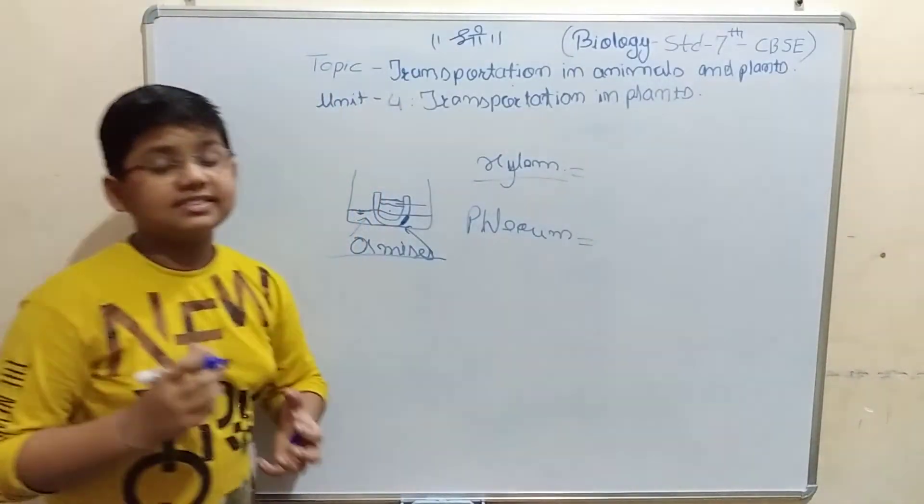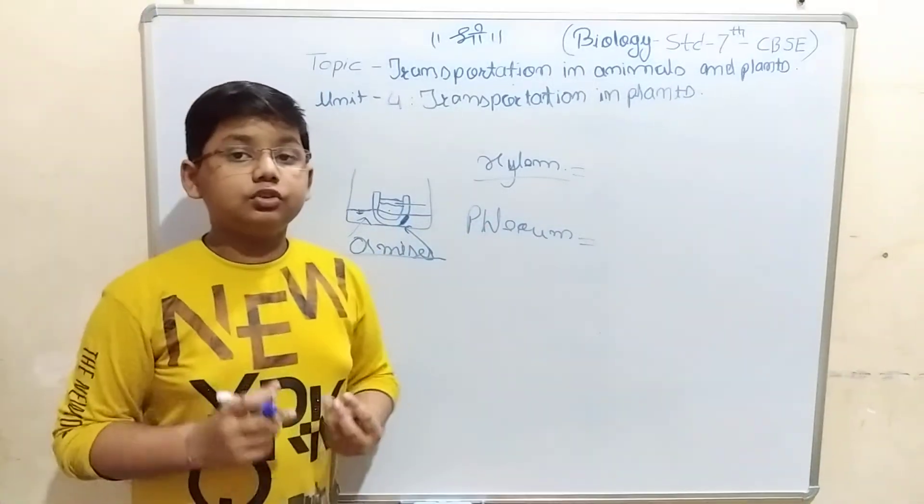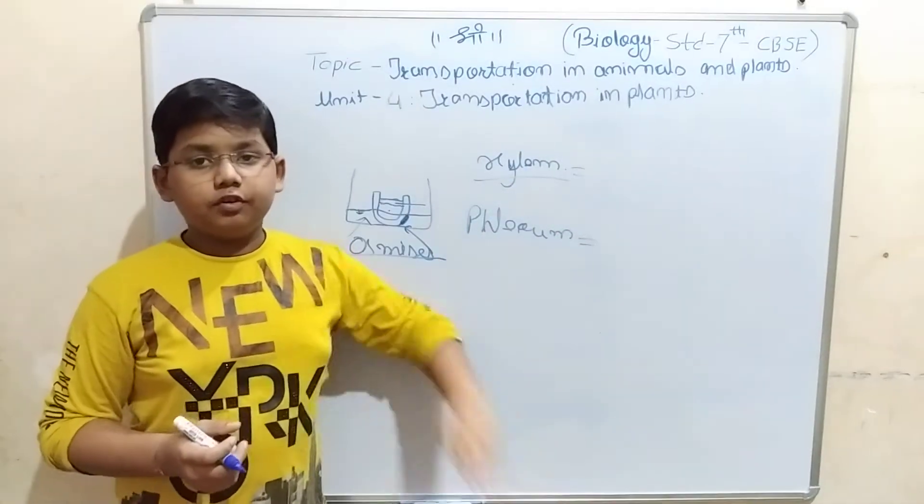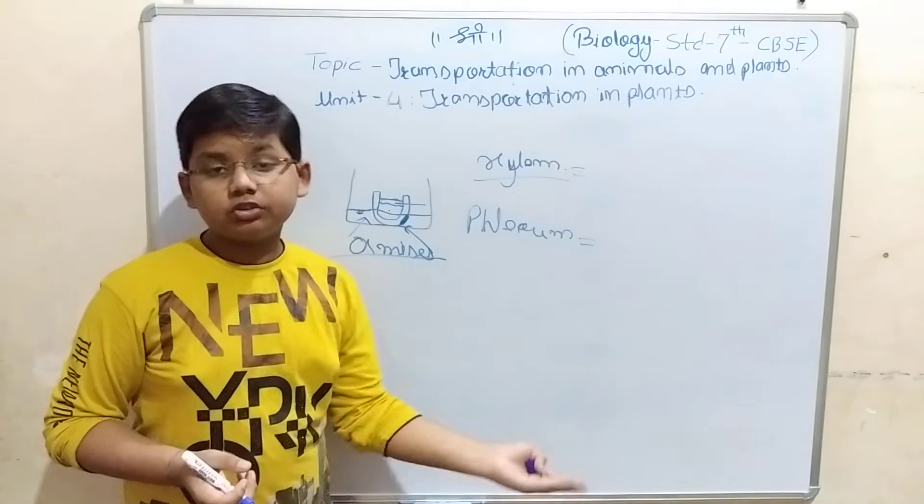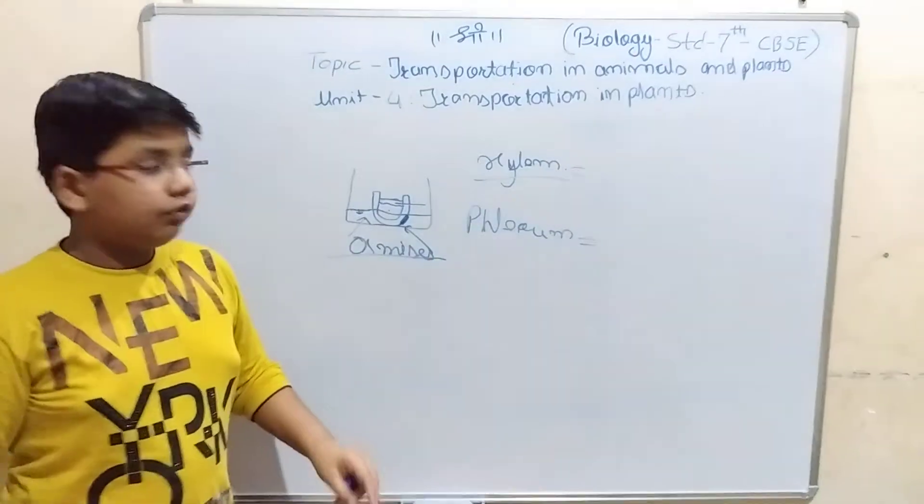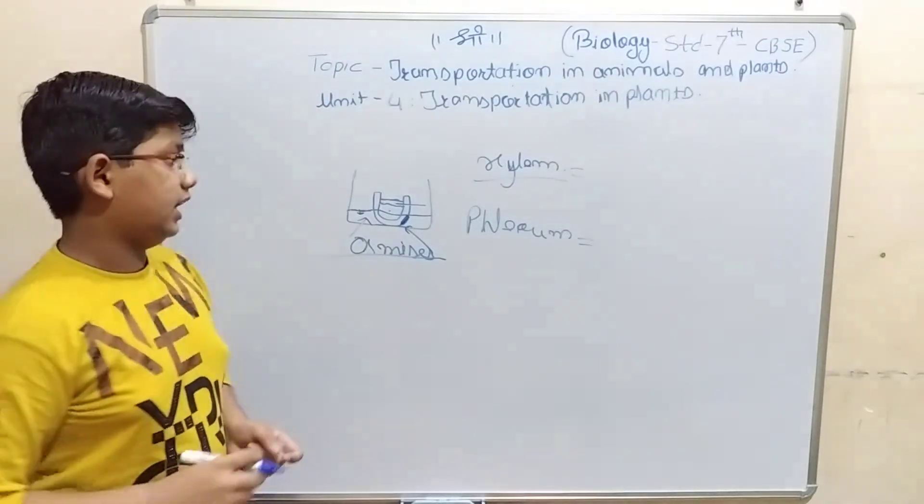Xylem allows water to reach the plant. And what is phloem? Phloem is used to take food from the leaves to other parts of the plant. That means food and minerals from one part to another. These are the two concepts: xylem and phloem.